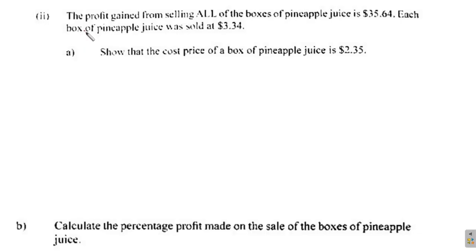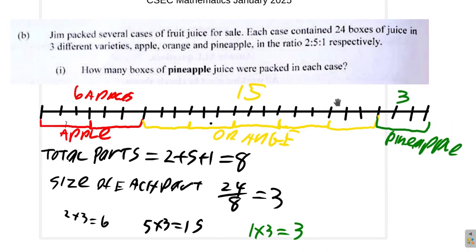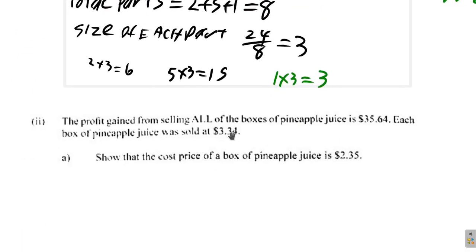Here. The profit gained from selling all the boxes of pineapple juice is $35.64. Each box of pineapple is sold at $3.34. Show that the cost price of the pineapple juice is $2.35. Okay. So, here, the profit is $35.64. Each box was sold for $3.34. So, here, remember, you have 3 boxes of pineapple juice, $3.34. Each box of pineapple juice, the cost price. So, here now.